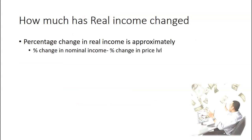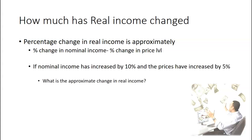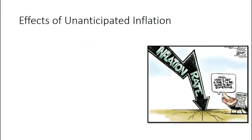To find how much real income has changed, you can use the equation directly, or if you're working with percentage changes, use this: the percentage change in real income is approximately the percentage change in nominal income minus the percentage change in price level. So if your income increased by 10% and inflation was 5%, the approximate change in real income is 5% — 10 minus 5. Much easier when given those numbers.